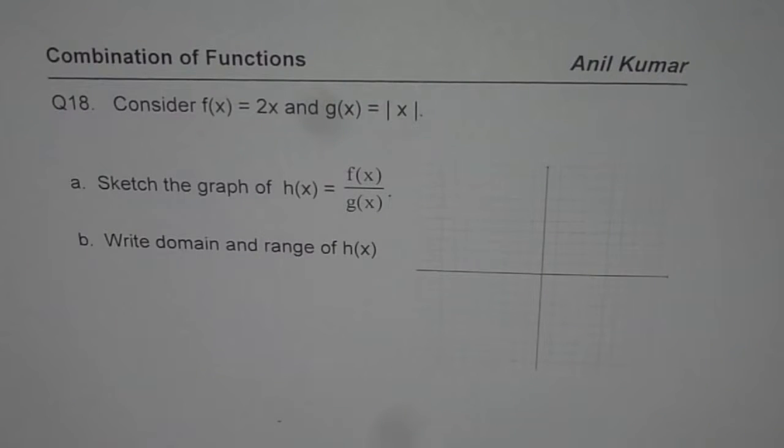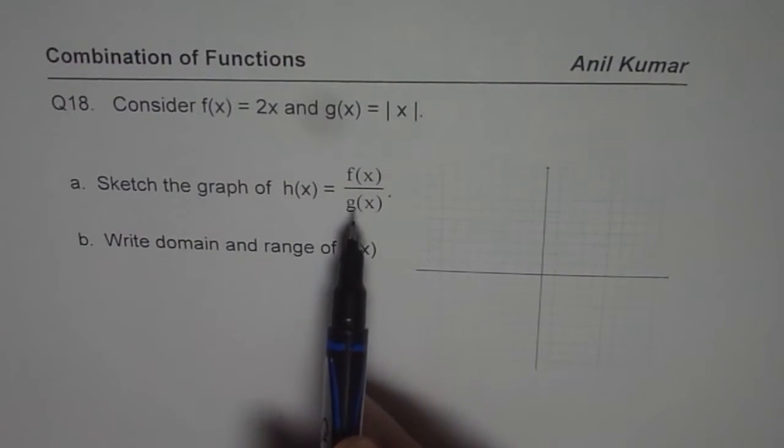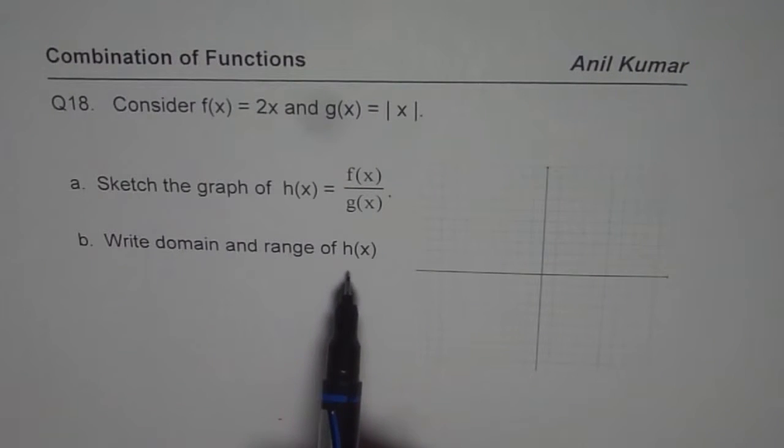Consider f of x equals 2x and g of x equals absolute x. You need to sketch the graph of h of x which is quotient of f of x and g of x. Write domain and range of h of x.